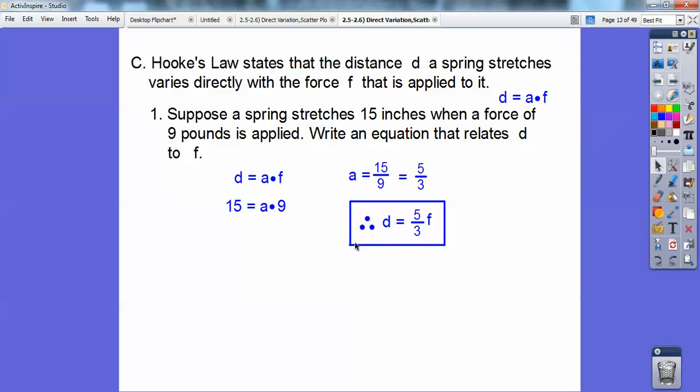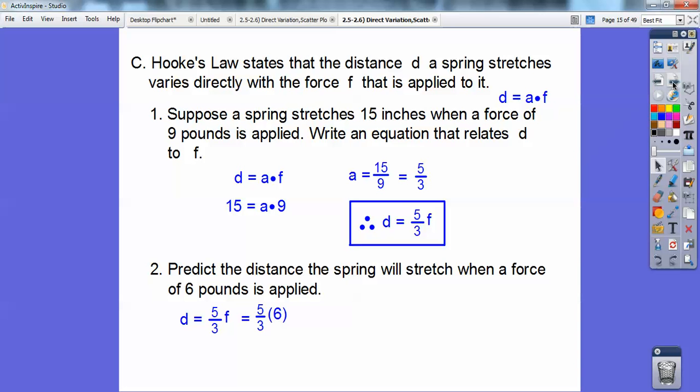So we're going to go ahead and plug in 15 and 9, divide by 9, and we get 5 thirds. So three dots means therefore. Therefore, my equation is d equals 5 thirds f right there. So now use that to predict the distance. A spring will stretch when a force of 6 pounds is applied. So a force of 6 pounds would be my f. So 6 goes in there. So I'm going to go ahead and cross cancel. And 5 times 2 is 10 inches.